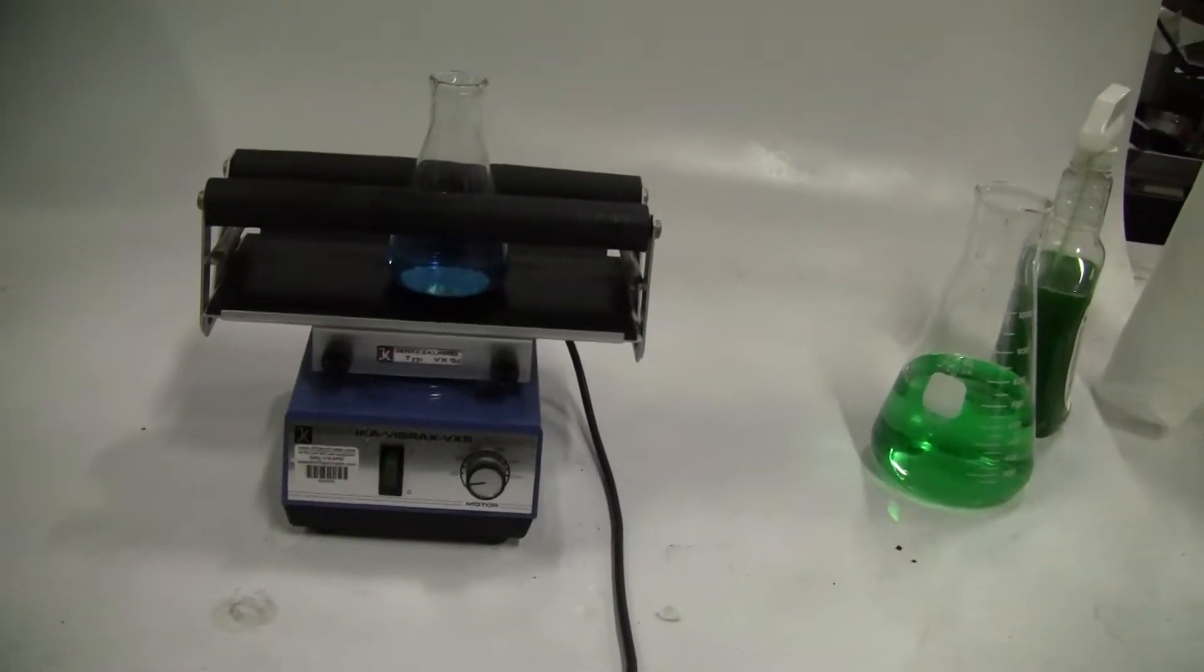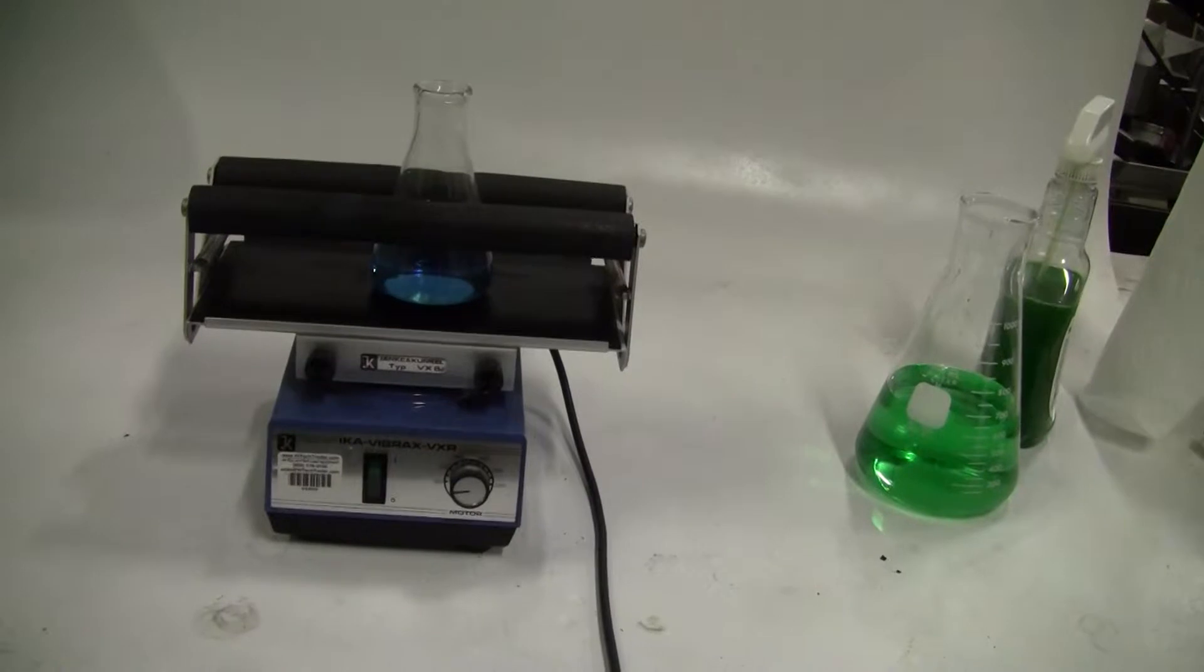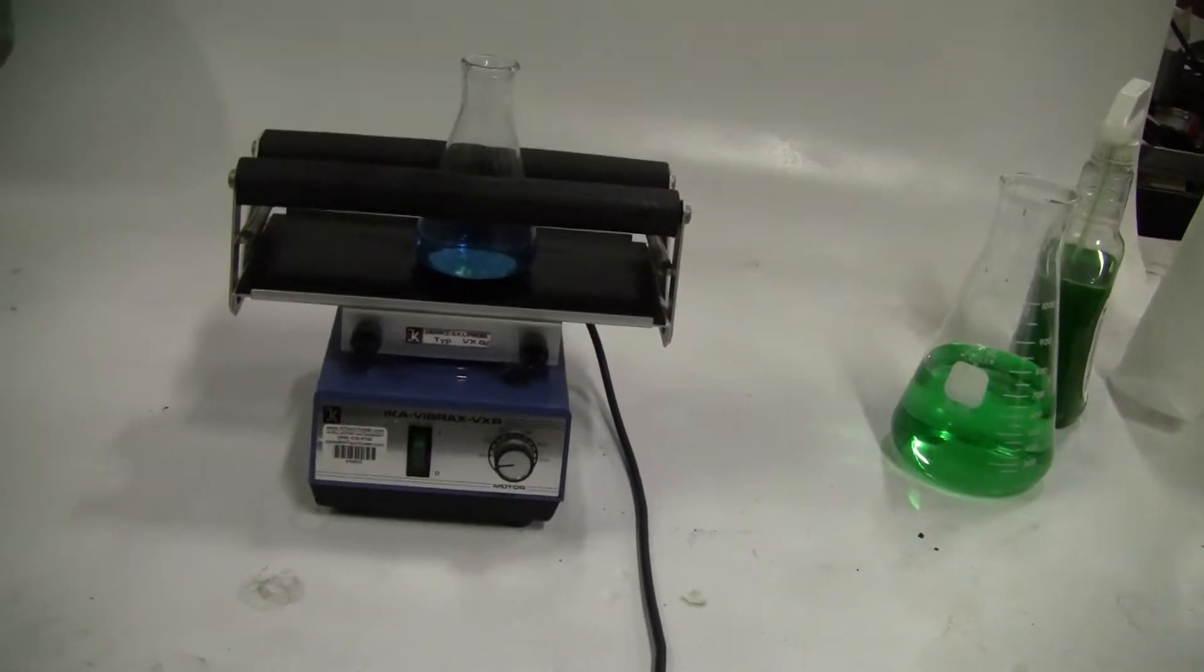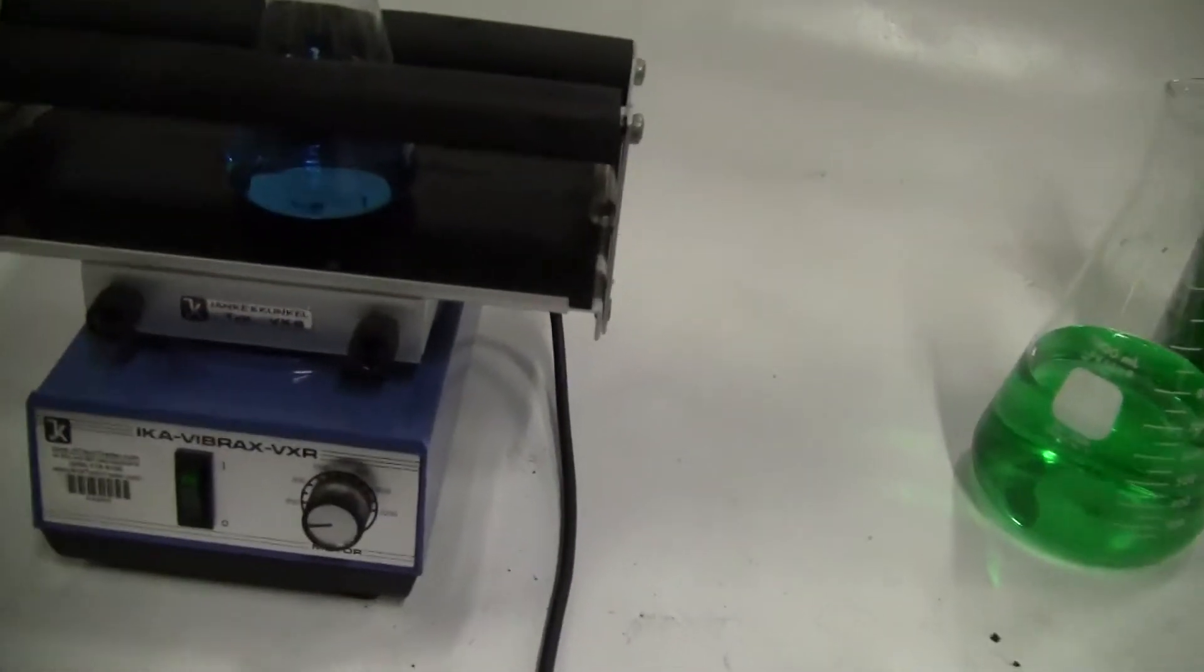Hi, this is Jim from HitechTrader. We're looking at an Ica Fiber Brax VXR orbital shaker. It goes to 2200 RPMs.